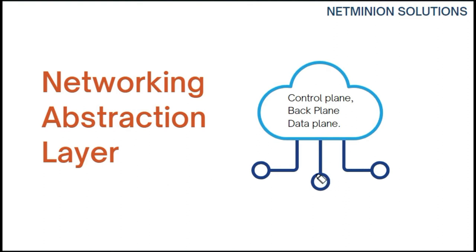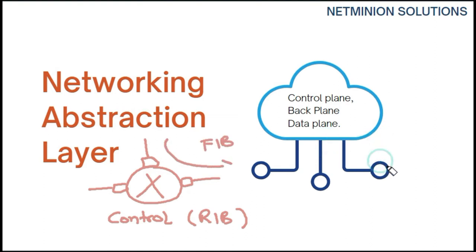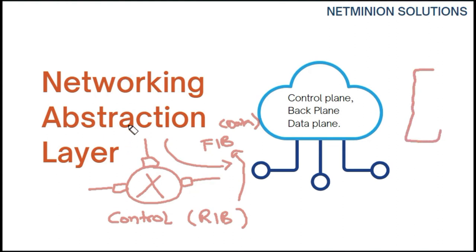Looking at a diagram: in a legacy router or switch, we have only the control plane — which includes the RIB — and it transfers data from one interface to another using the FIB, forwarding traffic based on routing decisions from the RIB. So the legacy device has both the control plane and the data plane in the same hardware appliance. For modular switches or high-end routers with line cards inserted into a chassis, the back plane or fabric carries traffic from one ASIC to another.